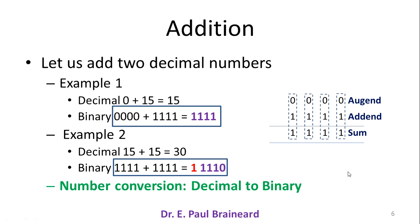0, 0, 0, 0 in 4 bit format. And the binary number for 15 is 1, 1, 1, 1. Here, 0, 0, 0, 0 is called AUGEND and 1, 1, 1, 1 is called ADDEND.